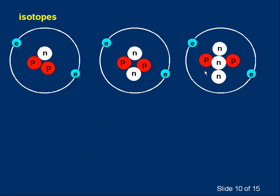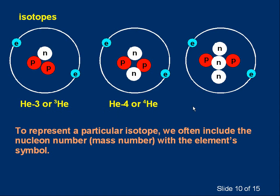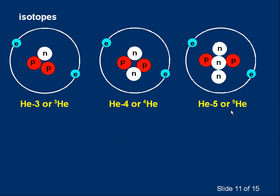To represent a particular isotope, we include the nucleon number or mass number along with the symbol. For example, helium-3 is written as He-3, or with the mass number on the top left. The mass number is three because there are three nucleons. Helium-4 and helium-5 can be written similarly. So we can have different isotopes of the same element represented this way.